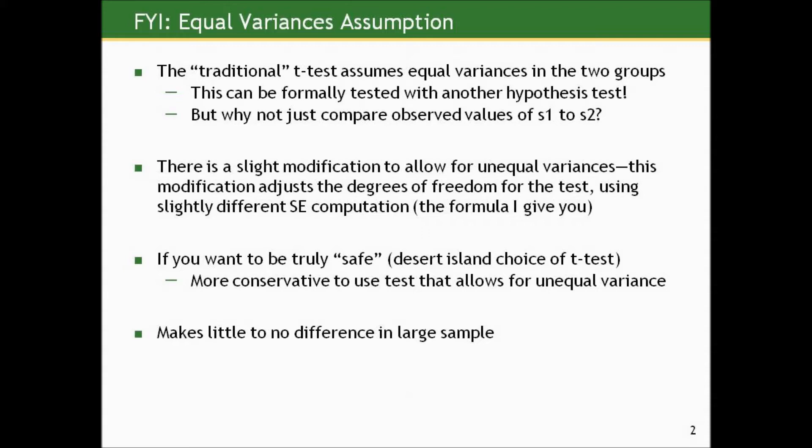The traditional t-test assumes equal variances — that's what it's going to say on your output. Variance is just standard deviation squared, so assuming equal variance is the same as assuming equal standard deviations in the two populations we're comparing. We could formally first do a hypothesis test where the null is that the underlying standard deviations are equal versus the alternative that they're not.